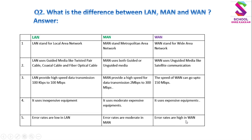Error rates are high in WAN — WAN में error rates अधिक होते हैं क्योंकि यह पूरी दुनिया का network है, data hacking का खतरा भी अधिक होता है। तो यह था LAN, MAN और WAN का difference। हम नए concepts के साथ मिलेंगे। Jai Hind!